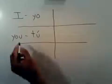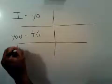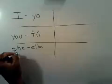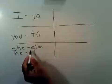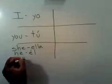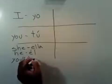In box number three, we have she, which is ella. A double L makes a 'ya' sound — that's why it's ella. We also have he, which is él. Notice the accent mark; if you didn't have the accent mark, it means 'the.' Also in this box, we have you, but this you is formal. I'm going to mark it F-M-L, and the word for that in Spanish is usted.